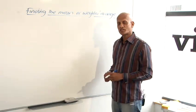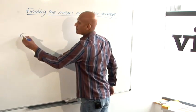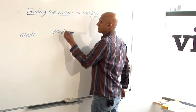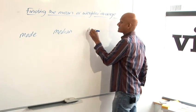So there are three measures of average. First one is the mode, second one is the median, and the third one is the mean.